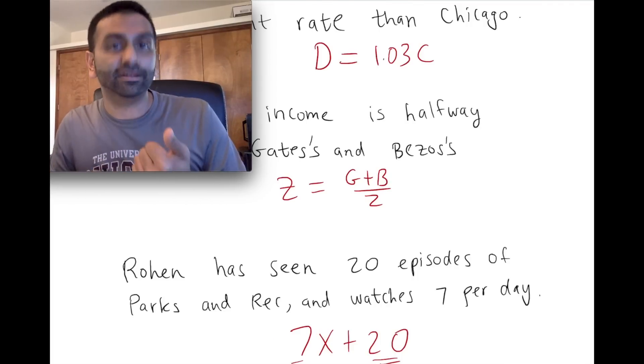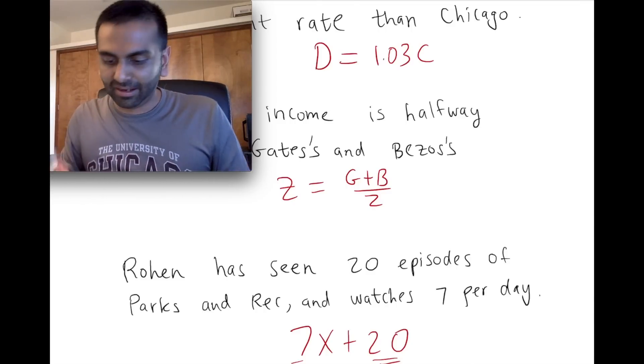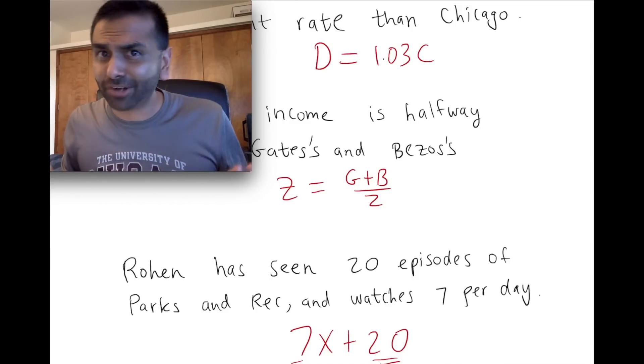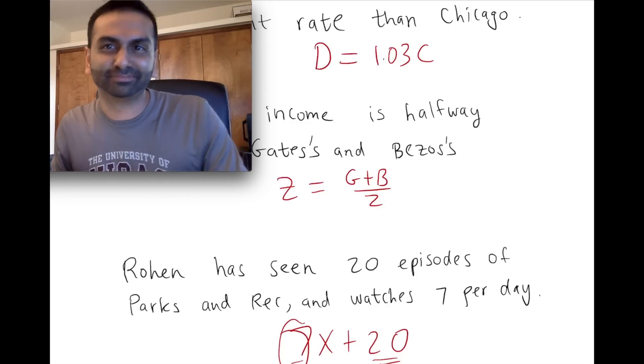If something is decreasing each period, then that would be a negative number. So if somebody were watching three fewer episodes of something each day—well, how would you even do that? Why would you do that? It's Parks and Rec. But if you were, that would be a negative.